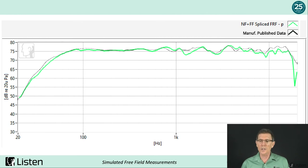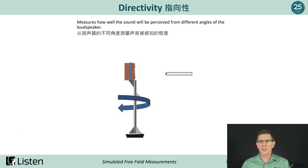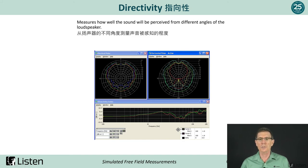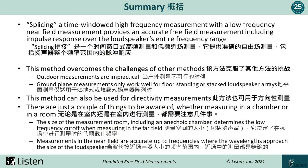We believe this method offers an excellent or even better alternative to an anechoic chamber measurement and is particularly valuable for those working at home without access to a chamber. We can also make directional measurements by placing the microphone at different angles off-axis — a turntable makes this fast and easy to automate. Once we've collected the data, we can show both horizontal and vertical polar plots as well as the directivity index. In summary, splicing a time-windowed high-frequency measurement with a low-frequency near-field measurement provides an accurate free-field measurement including impulse response over the loudspeaker's entire frequency range.